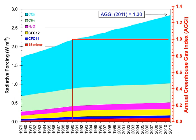Annual per capita emissions in the industrialized countries are typically as much as 10 times the average in developing countries. Due to China's fast economic development, its annual per capita emissions are quickly approaching the levels of those in the Annex I group of the Kyoto Protocol. Other countries with fast-growing emissions are South Korea, Iran, and Australia, which — apart from the oil-rich Persian Gulf states — now has the highest per capita emission rate in the world.